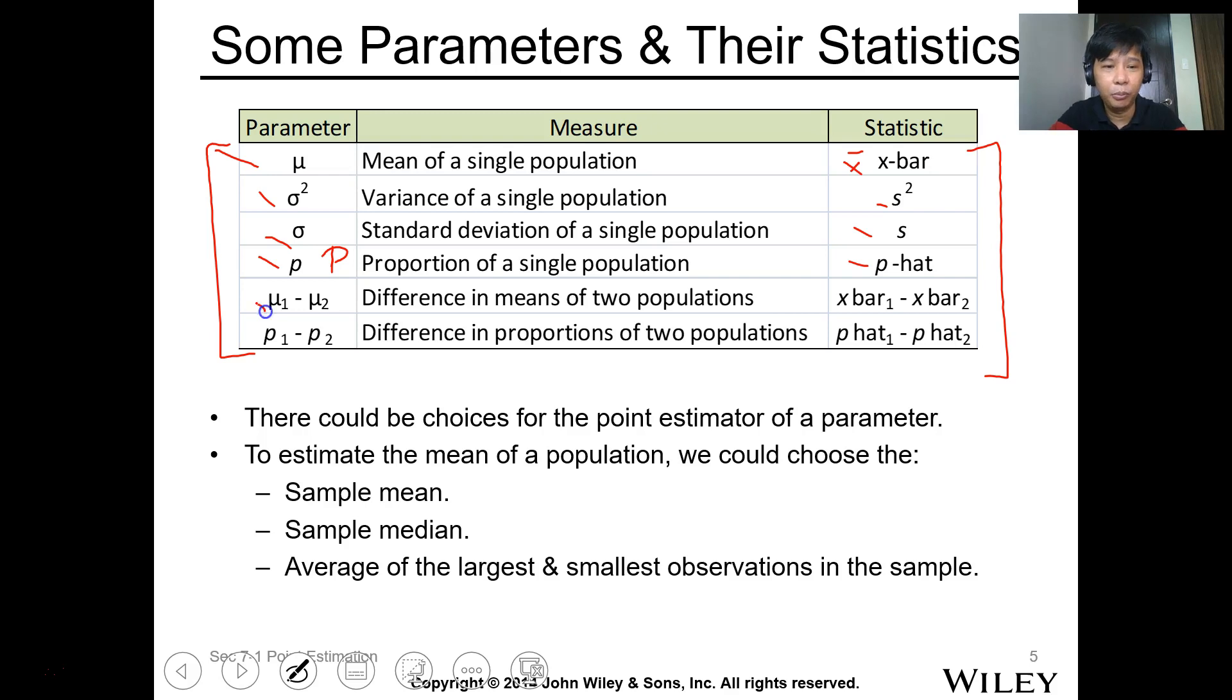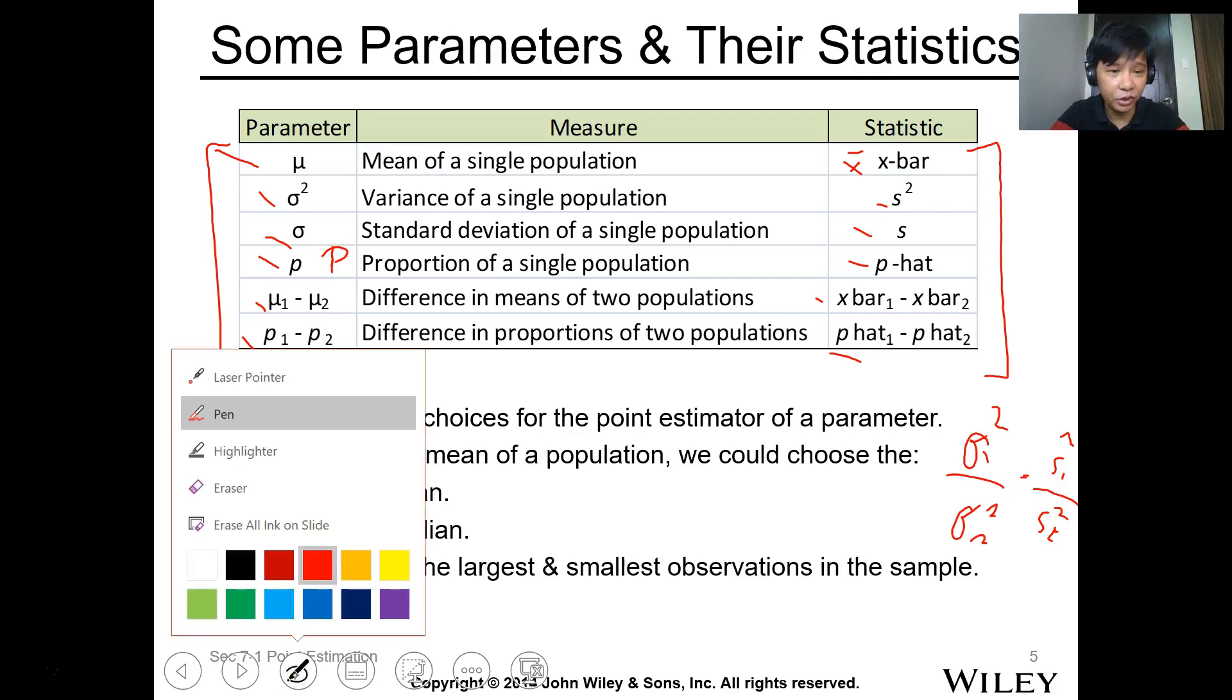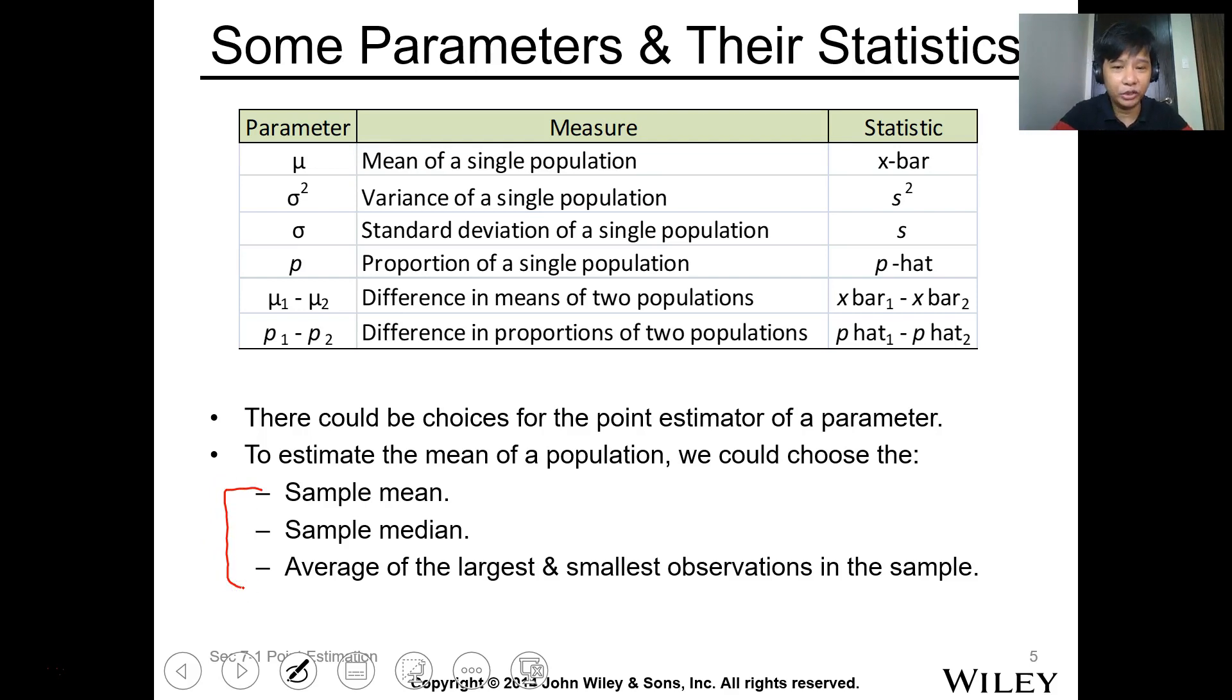For difference between two means, you have mu1 minus mu2, which is equal to x bar 1 minus x bar 2. For the difference in the proportion, you have p1 minus p2. The estimation in statistics is p hat 1 minus p hat 2. There could be choices of point estimation for parameters. You have the ratio of variance, you can have the ratio of sigma 1 over sigma squared 2. This is the same as s1 squared over s2 squared. Now, you can estimate a population mean by sample mean, or the average of the largest and smallest observation. But basically, we utilize this one as an estimation of the mean. Take note, this is a central value.